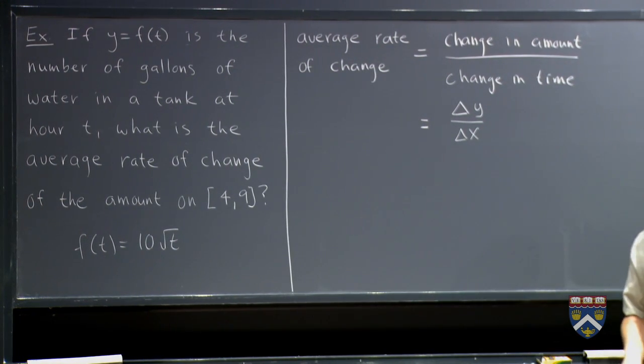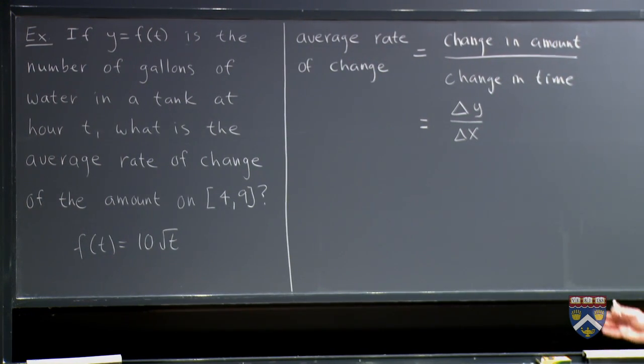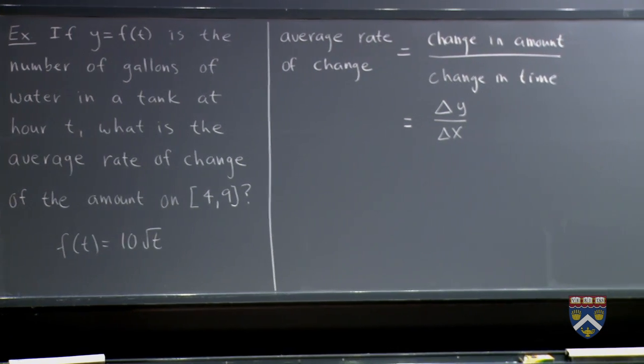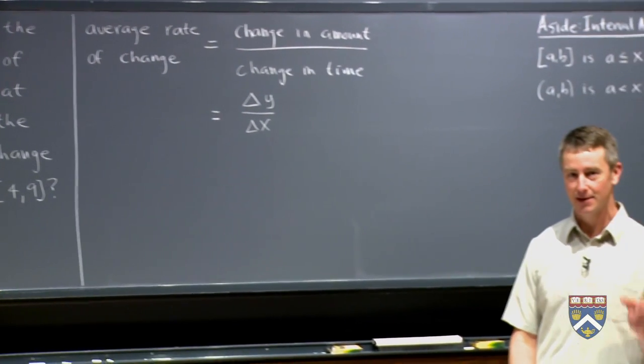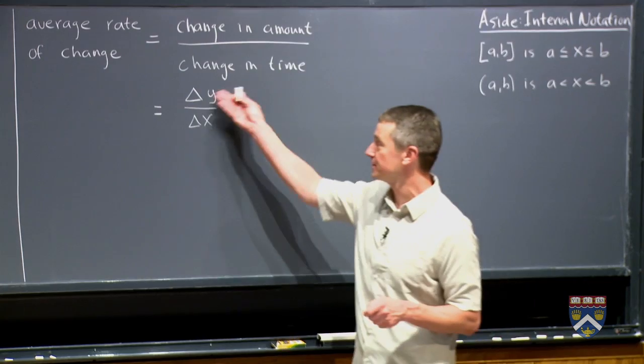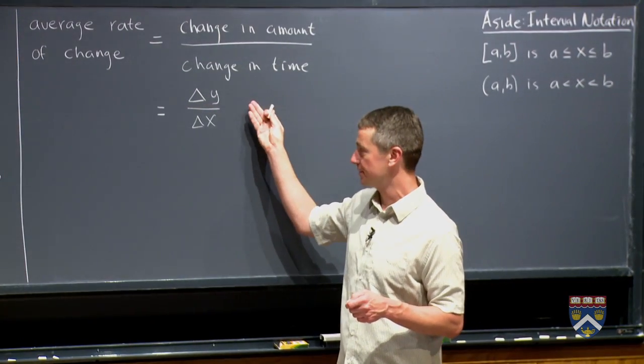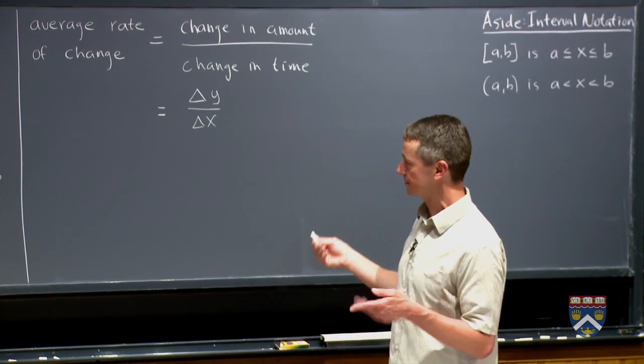And of all the different Greek letters we could have chosen, why do you think we chose delta for this? We chose delta because it's the Greek letter that sounds like our English letter d for difference. So this is the difference in the y values. In other words, change in y over the difference in x, change in x.